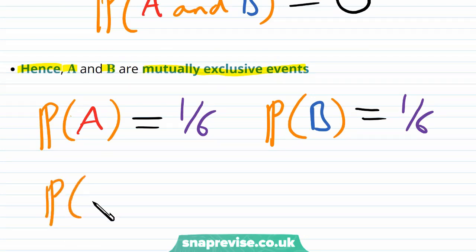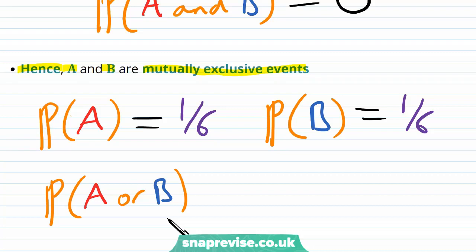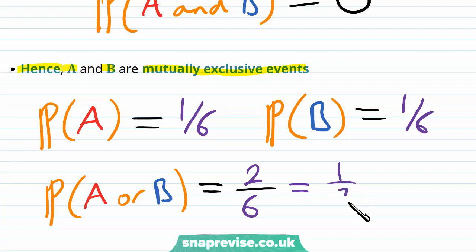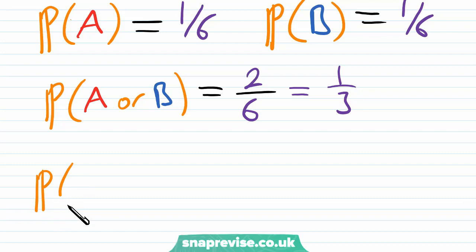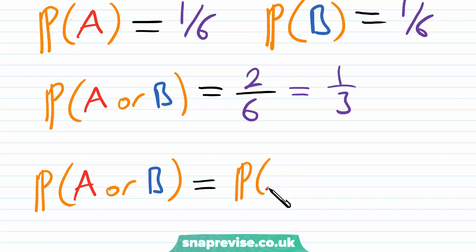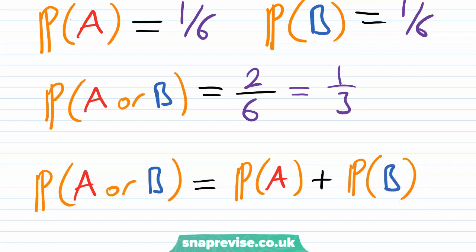If we think about the probability of A or B — verifying the formula — A or B is the probability of having a 5 or a 6, giving two outcomes out of six. Using the Equally Likely Outcomes Formula, this is 2/6, which is one-third. And indeed, one-sixth plus one-sixth is two-sixths, which is one-third. Therefore we have verified the mutually exclusive formula in this case.